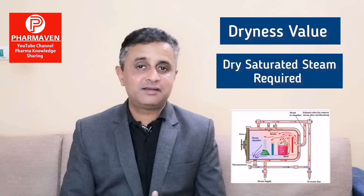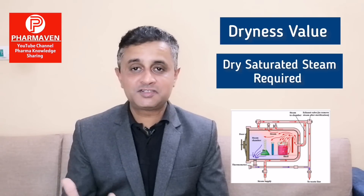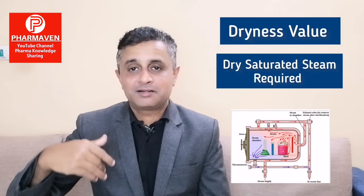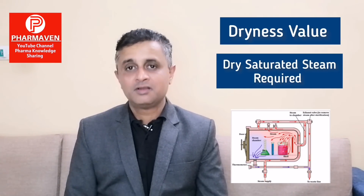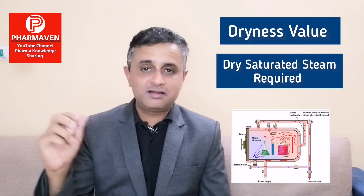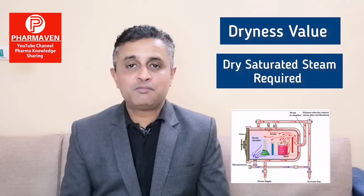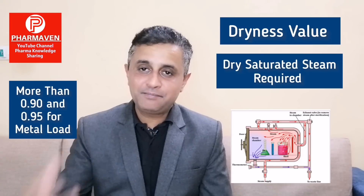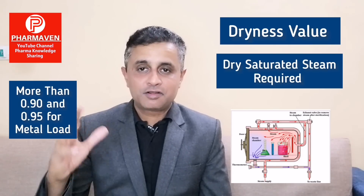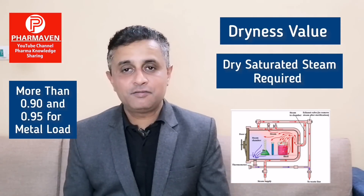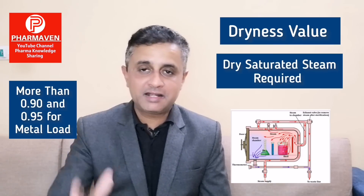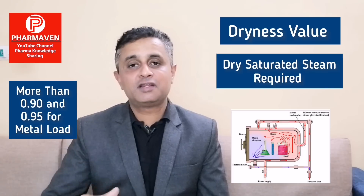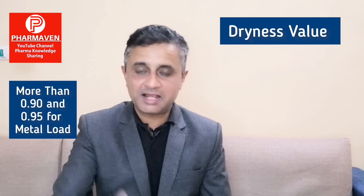We need heat transfer from steam to load to achieve effective sterilization. If steam contains many water droplets it is wet steam — not saturated steam. For that we need dry steam. Dry steam has enough moisture so that it will travel, condense, and transfer the latent heat of vaporization to the load. The acceptance criteria for dryness value is: dryness value should be more than 0.90 for normal loads and more than 0.95 for metal or hard loads. If we consider 1 as the value of dry saturated steam, we need 0.90 for normal loads and more than 0.95 for metal loads.